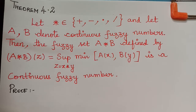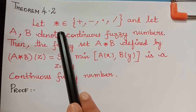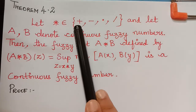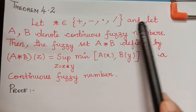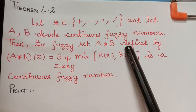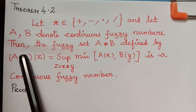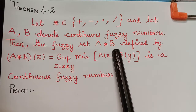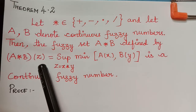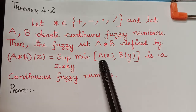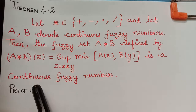Hello students. We shall now learn a theorem under the topic fuzzy arithmetic based on extension principle. The theorem states that let star be an element of plus, minus, multiplication, and division — so star is any one of these four operations — and let A and B denote continuous fuzzy numbers. Then the fuzzy set A★B defined by A★B(z) = supremum over z = x★y of minimum of A(x) and B(y) is a continuous fuzzy number.